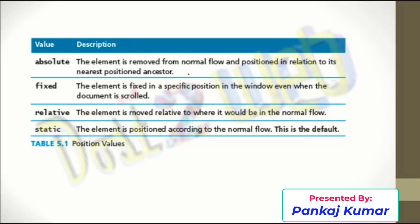Whenever you are going to move an element, that is the positioning element. There are certain position values: absolute, fixed, relative, and static — these four values you can use when positioning an element. What is absolute? The element is removed from the normal flow and positioned relative to its nearest positioned ancestor.